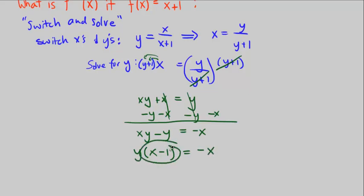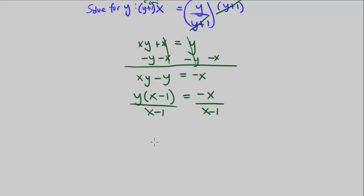That's equal to negative x. So to get rid of x minus 1, we divide both sides by x minus 1. And we have y alone, because these cancel out, equal to negative x over x minus 1.